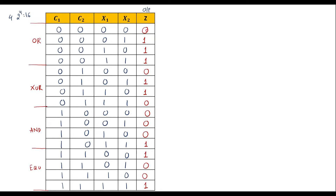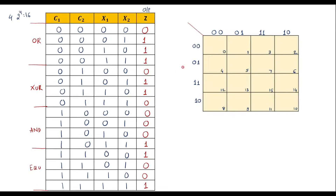Now, with the help of K-map we can easily derive the Boolean expression. We have 16 different states, so we need a 4-variable K-map. Let me draw the 4-variable K-map, with C1 and C2 on one axis and X1 and X2 on the other.